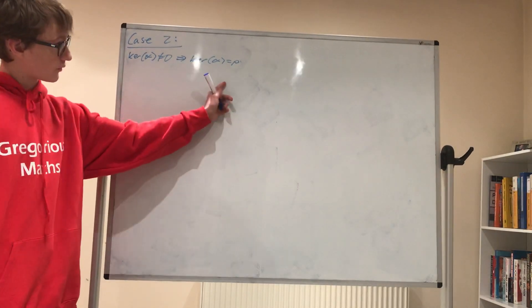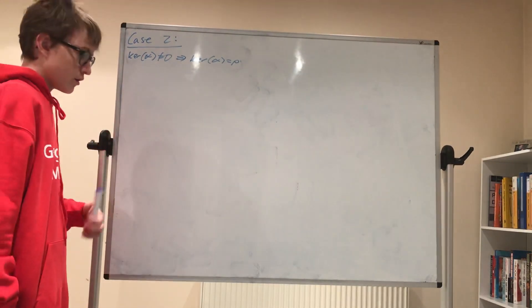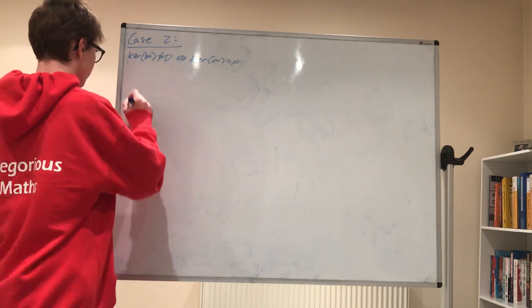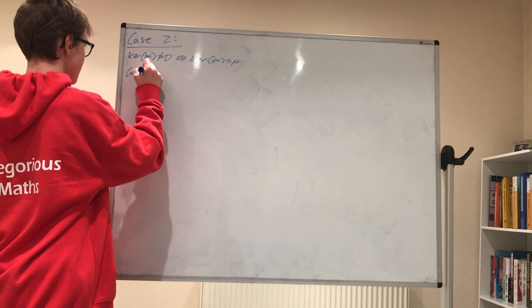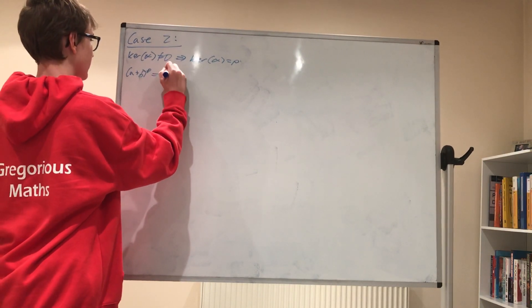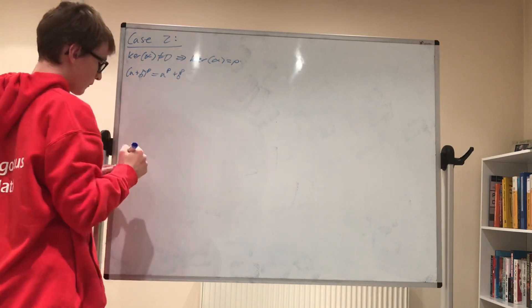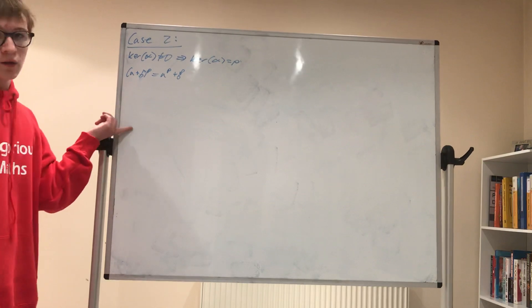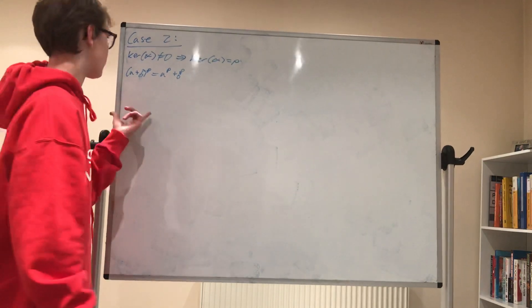So we have the kernel of alpha is a prime. And now a consequence of this is actually that in f, a plus b to the power of p is equal to a to the p plus b to the p. And we wish this was true for all real numbers, but unfortunately it's only in fields with characteristic p.